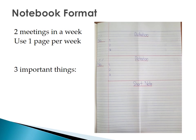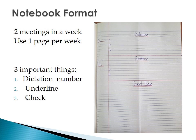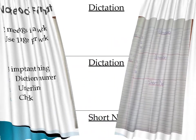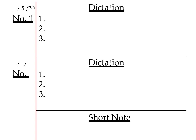Now, three important things to remember upon doing the notebook. First, we have the dictation number. Second, underline. And number three is to check the words once you're done with the dictation words. Once you're done with the format, let us do the dictation words. You need to fill in the date for today. Make sure to take note that it's the first dictation, or it's number one.